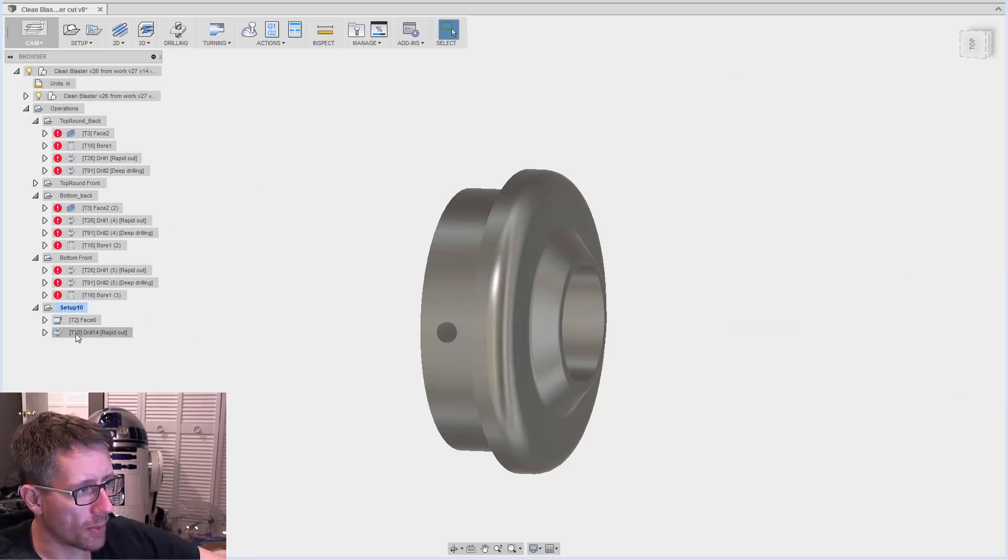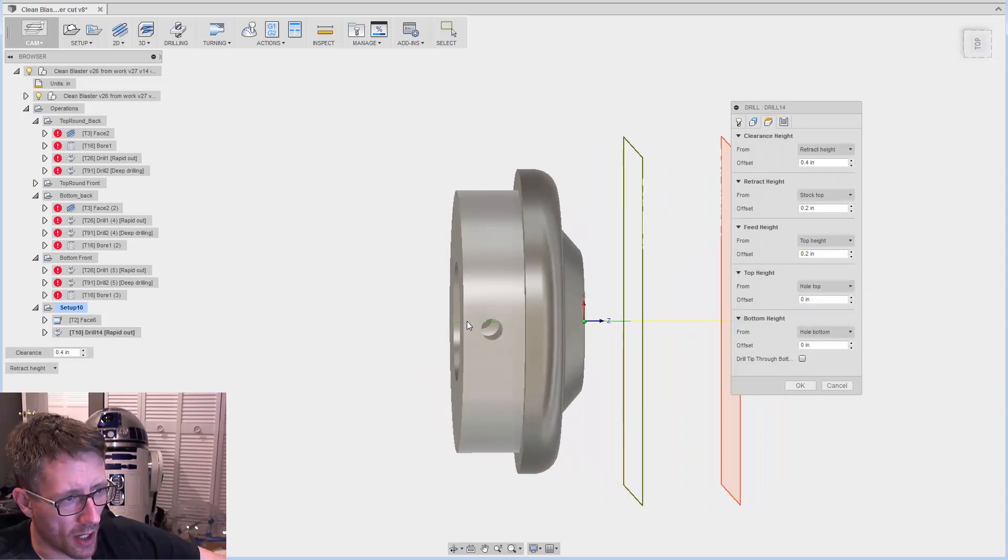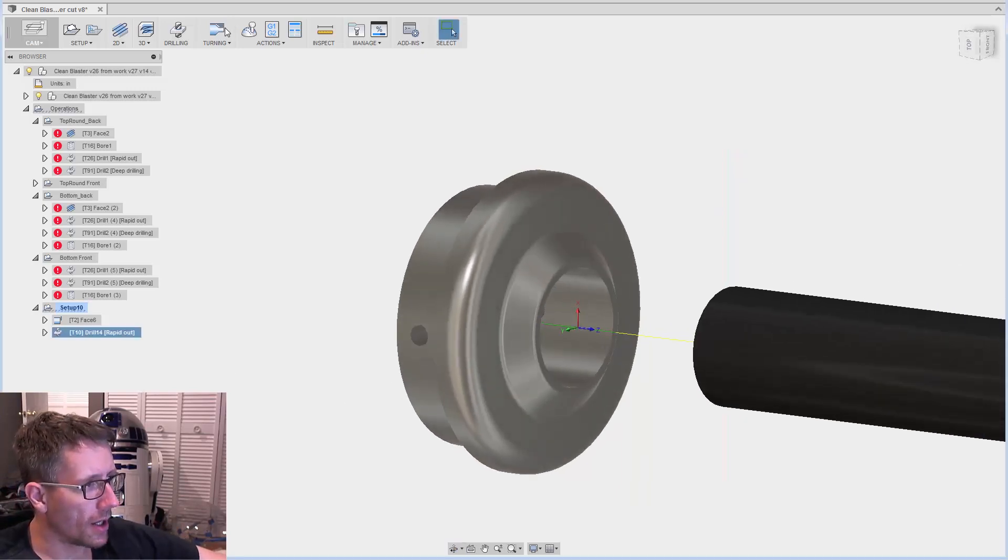Let me go back and edit. We want to make sure the drill is going to poke through all the way. Let's go to settings. You can see it stops right there. So we want to turn on drill tip through bottom and then maybe add a little extra. As you can see, it's going to go through now.